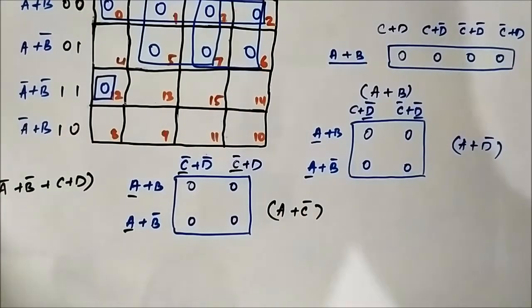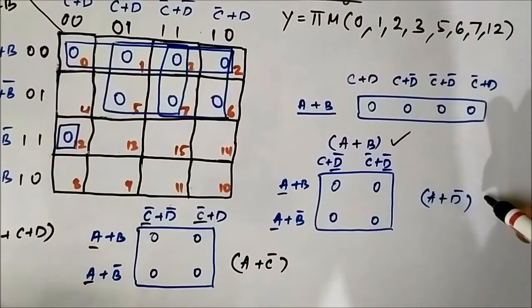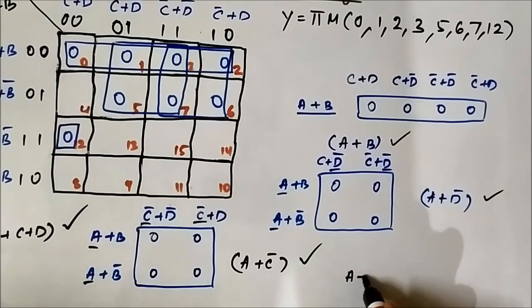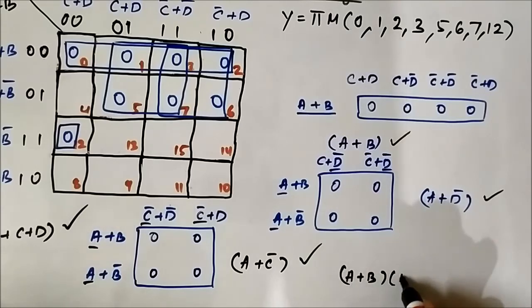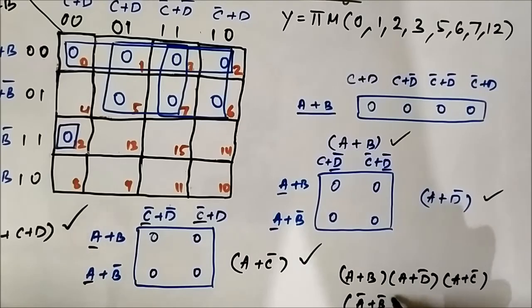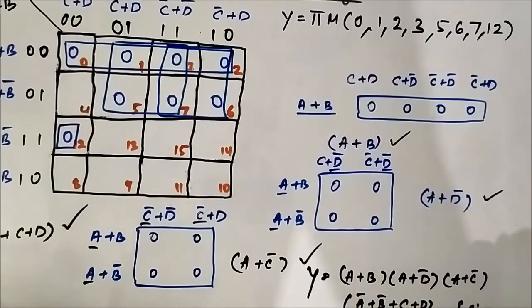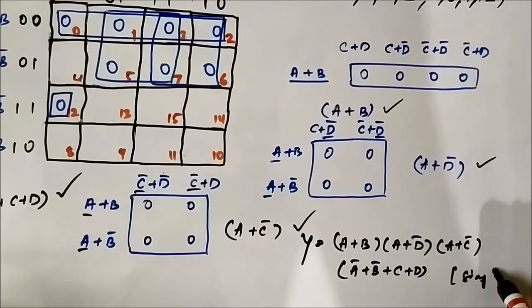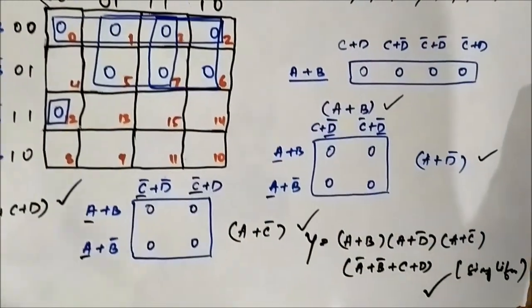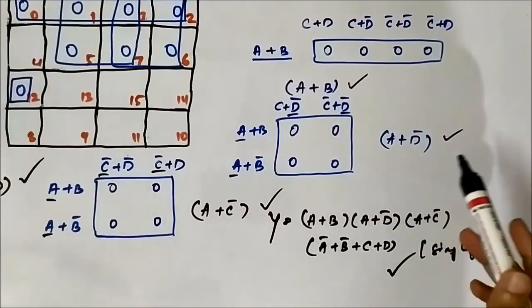So the simplified Boolean expression combining these common sets of variables is: (A or B) · (A or D bar) · (A or C bar) · (A bar or B bar or C or D). This is the simplified POS Boolean expression.